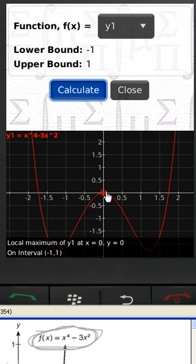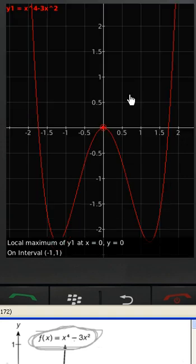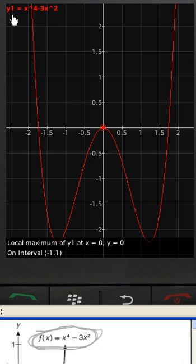And I see that when I click on calculate, it does find a local maximum right here. It tells me there's a local maximum of y1 at x equals 0, y equals 0. And I was looking on the interval negative 1 to 1. Of course, for full screen, I just close this.